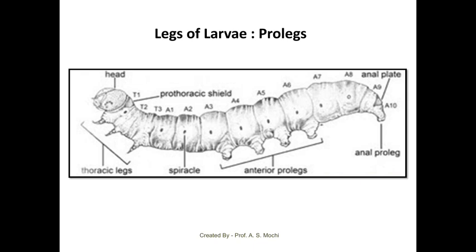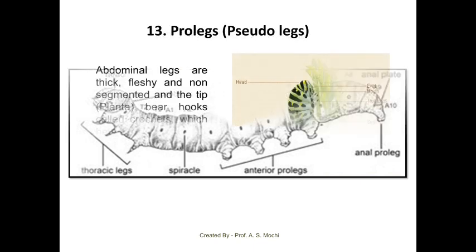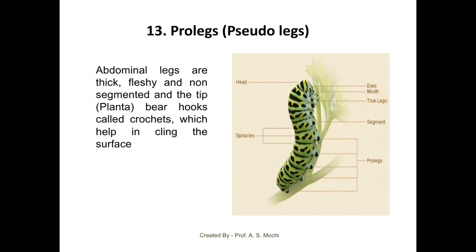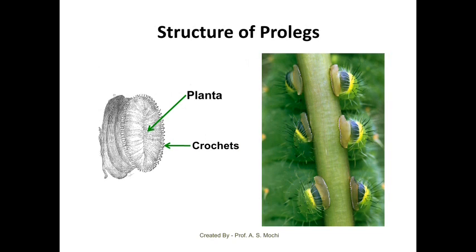Larvae have two types of legs: thoracic legs and abdominal legs, both also called pro-legs or pseudo-legs. The abdominal pro-legs or pseudo-legs of larvae are thick, fleshy, and non-segmented; at the tip, the planta bears hook-like structures called crotchets. With the help of crotchets, the larvae cling to plant surfaces. Each pro-leg has a crotchet at its end, and its function is to grip or cling to the plant surface. This is the structure of pro-legs.